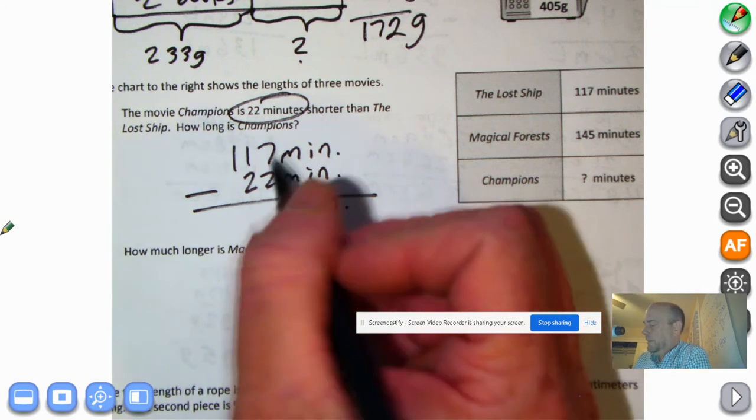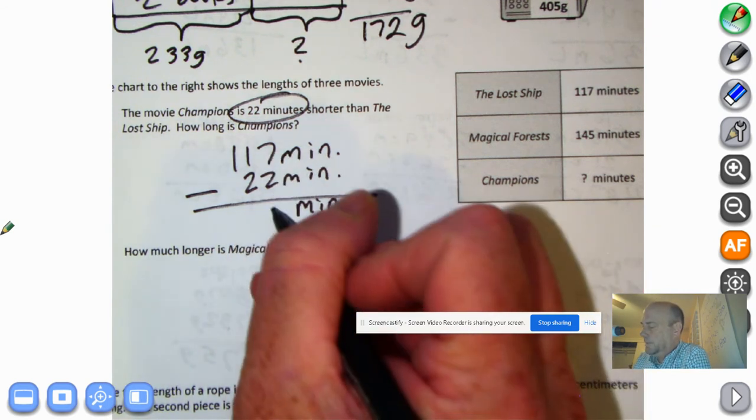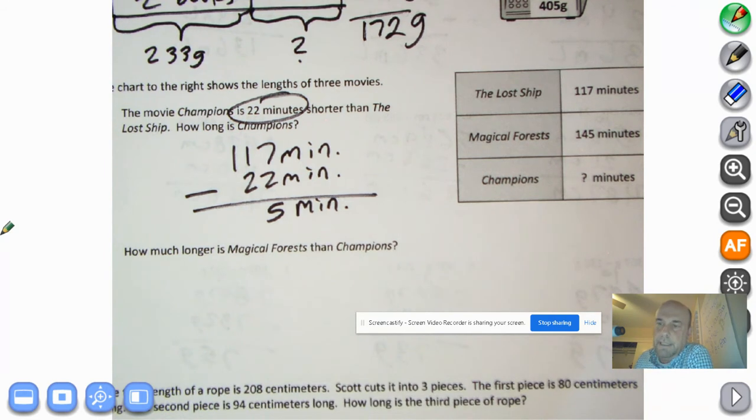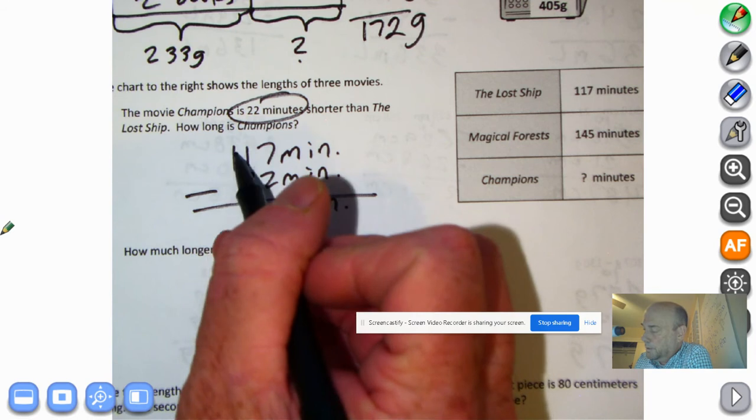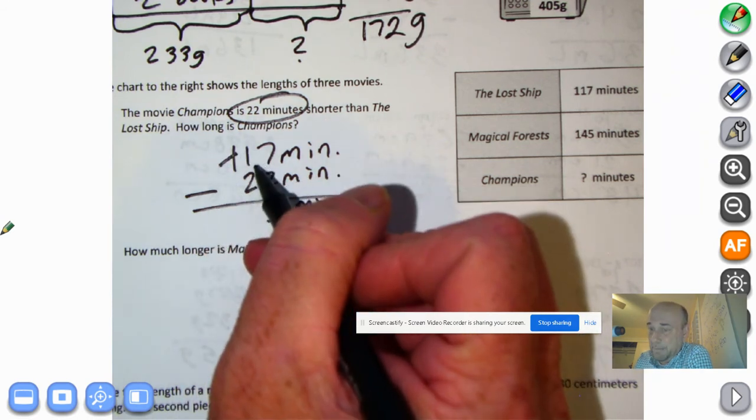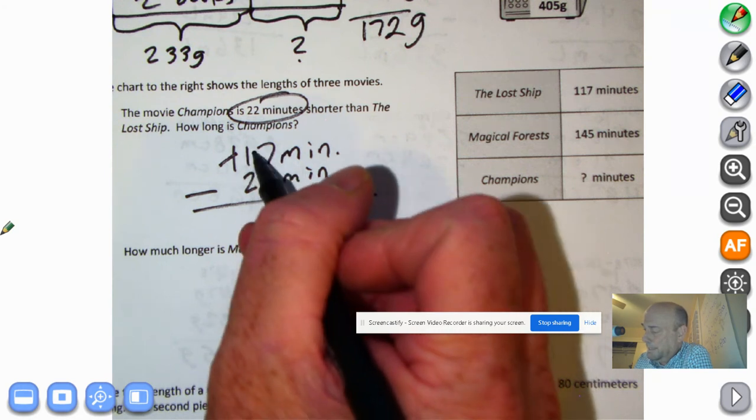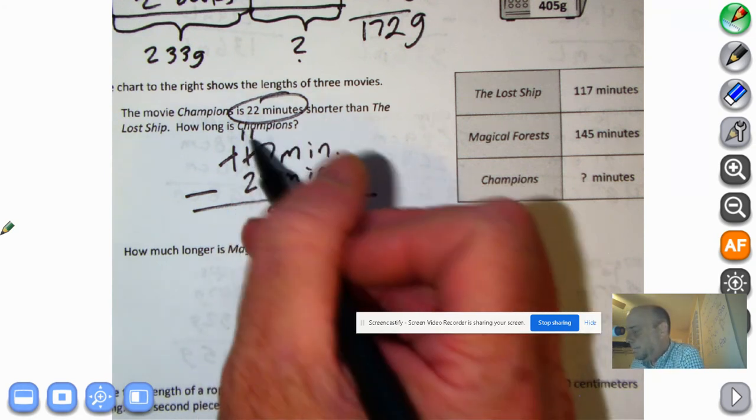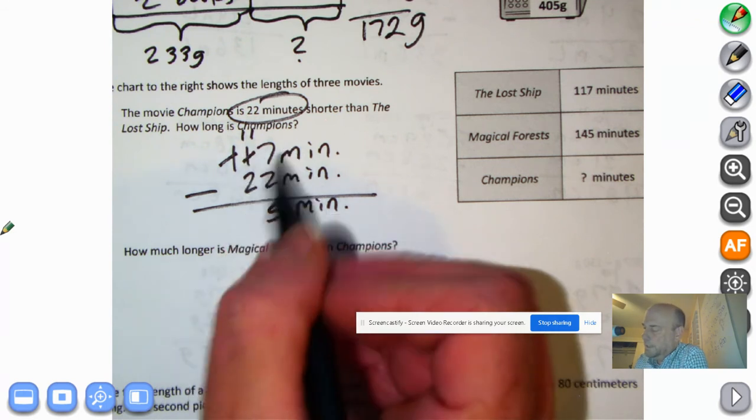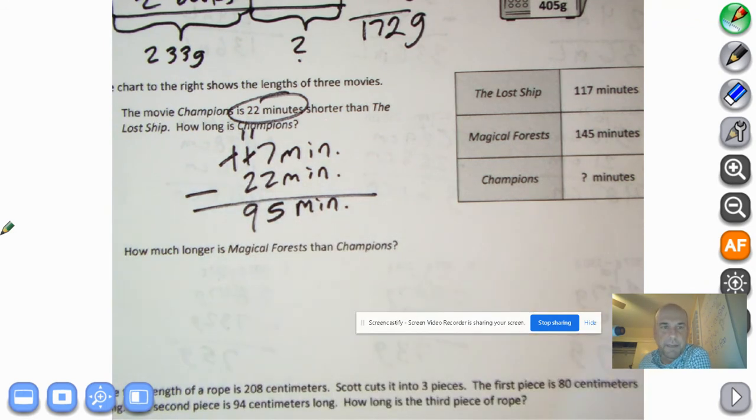And welcome back. 7 minutes minus 2 minutes is 5 minutes. I can't take 20 minutes away from 10 minutes. So we need to decompose these minutes. That's 100 minutes. We'll make 10 ten minutes plus 1 ten minute is 11 ten minutes. 11 ten minutes minus 2 ten minutes is 9. And there's our answer, 95 minutes.